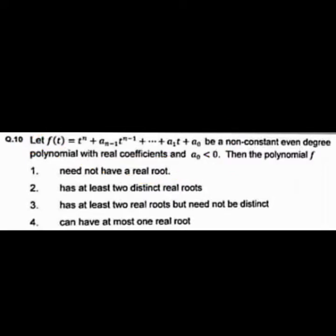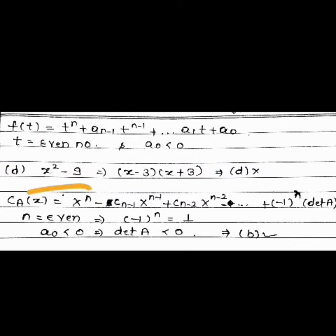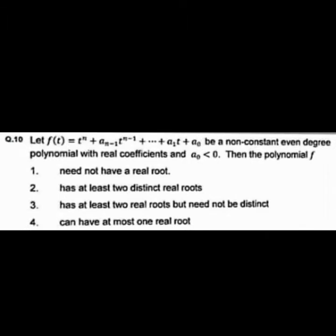So here we have f(t), a degree-n polynomial, where a_0 is negative. We need to determine the nature of the roots of this polynomial. Let's consider a counter-example: take x² - 9. Then the roots are x = 3 and x = -3, so both real roots exist. This discards option D (at most one real root), since we have two real roots.